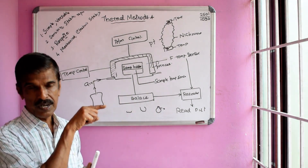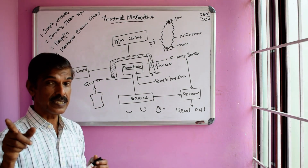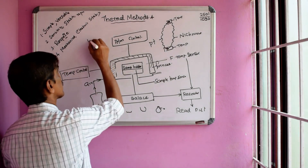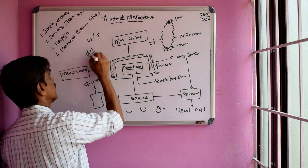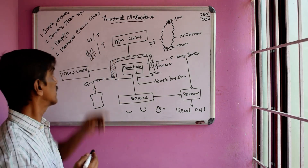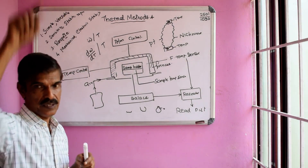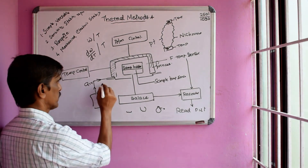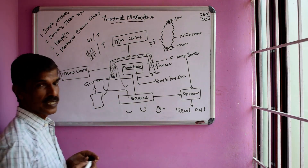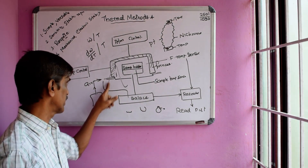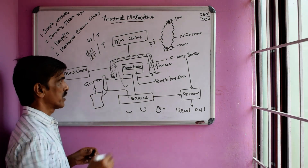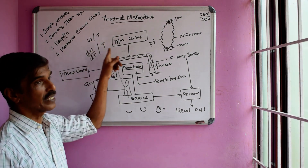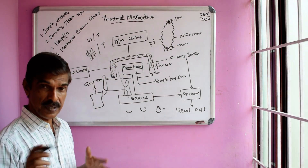The output of the thermobalance can be plotted as mass against temperature — this is the TG curve — or as the derivative thermogram, DTG, which plots dW/dT against temperature. In the DTG curve, each slanting step in the TG curve corresponds to one peak in the DTG curve.